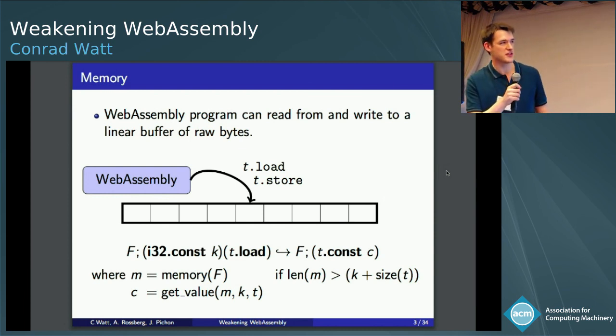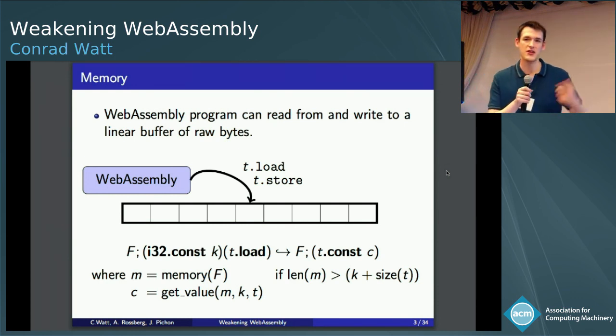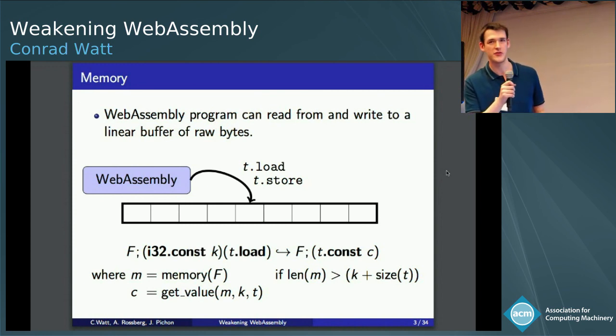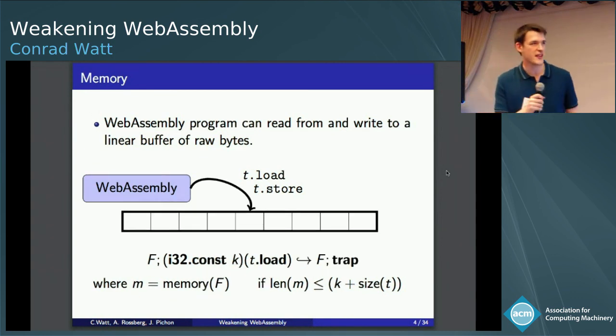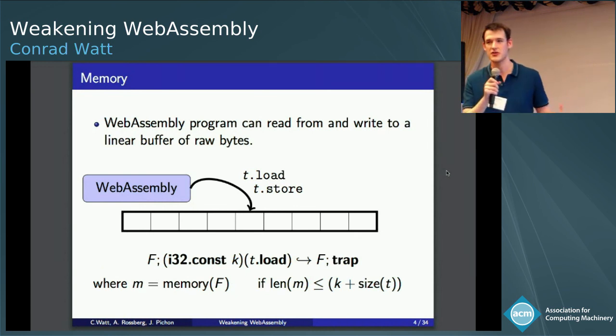So the semantics of load is you give it a single int32, this index k, and then it goes to location k in linear memory, and it reads out bytes until it has enough bytes to make a value of type t, and then it returns the value. And I said you go to index k, but it is possible for this index to be out of bounds. And in this case, WebAssembly just specifies that you get a trap, and execution stops immediately.